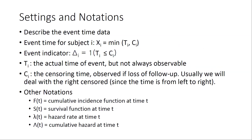Here are the settings and notations. The goal is to describe survival data or time-to-event data. The event time for each subject i — where i goes from 1 to N, the sample size — is denoted. What we observe for each individual is X_i, which equals the minimum of T_i and C_i. Another observable quantity is the event indicator delta_i, a dummy variable. Delta_i is an indicator function checking if T_i is less than or equal to C_i. T_i is the actual time of event, but not always observable.